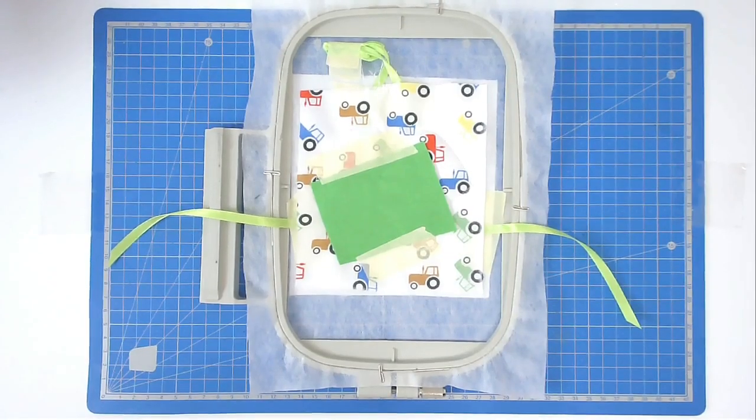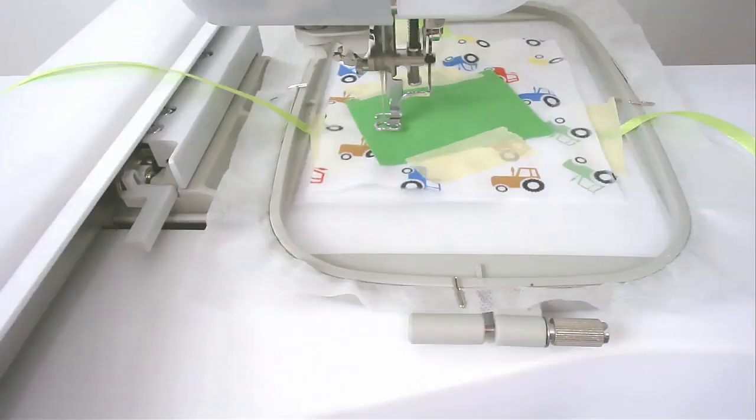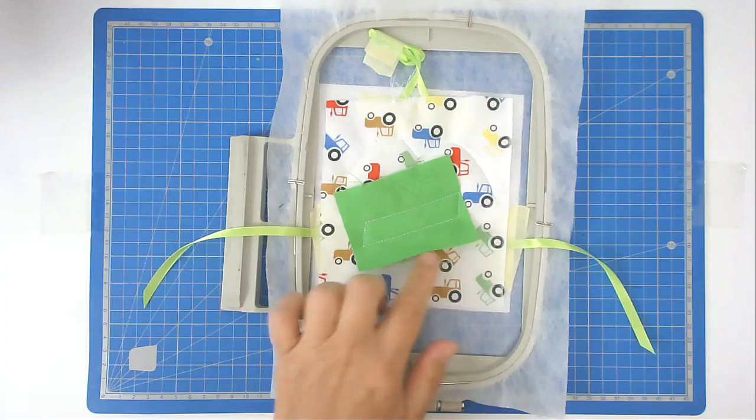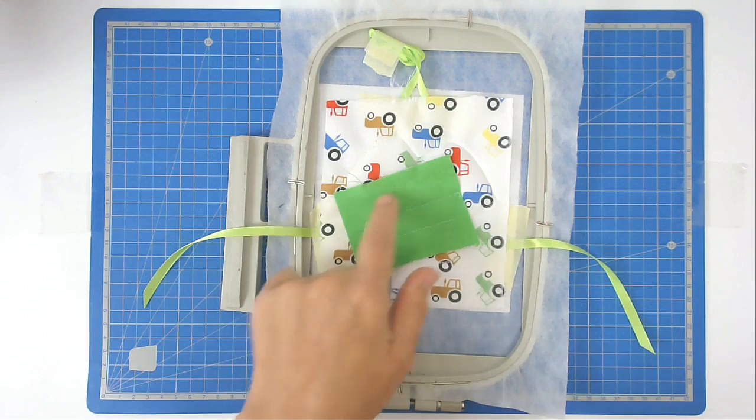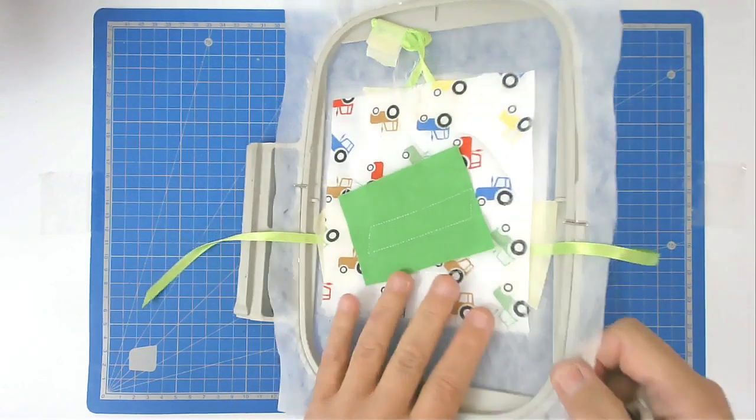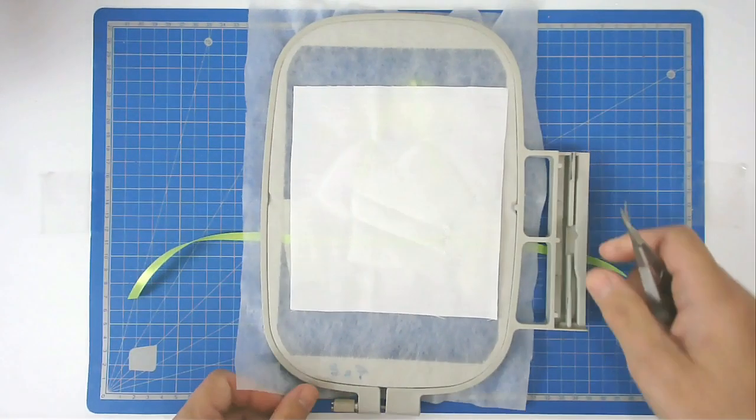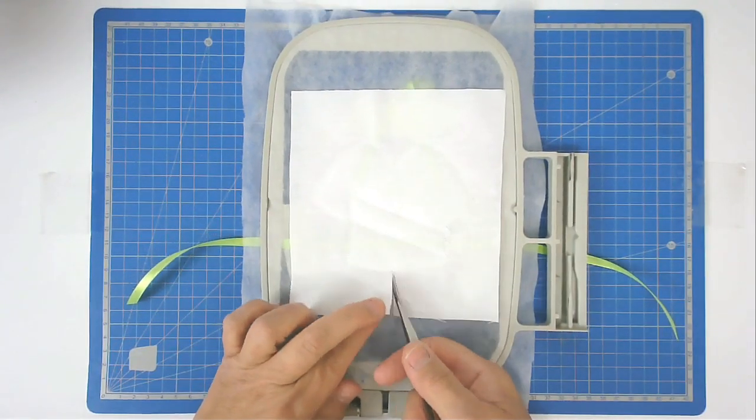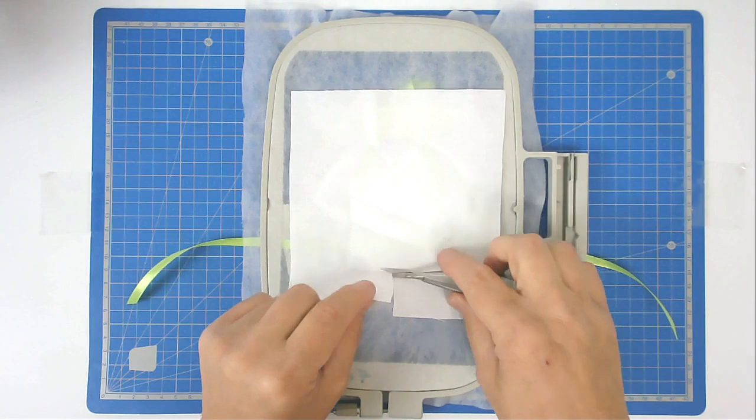You can now pop that into your machine and stitch round number five. You're now going to trim up all the excess fabric from both the front and the back of the hoop. So I'm going to start off at the back, turning it over, and now I'm just going to cut close to the stitch line.